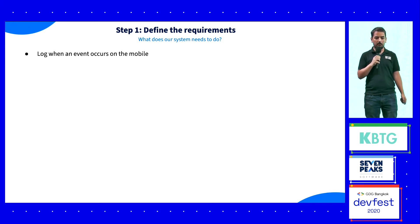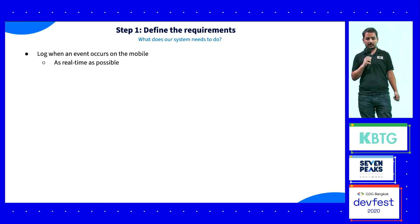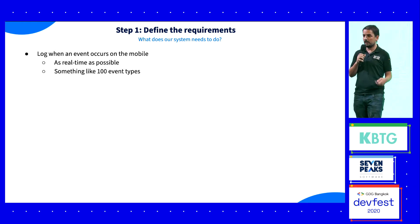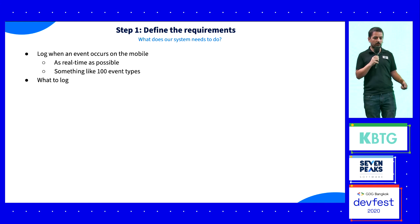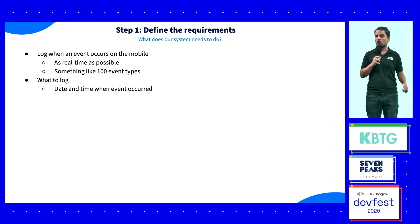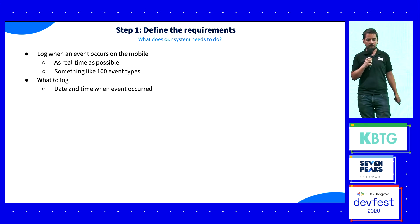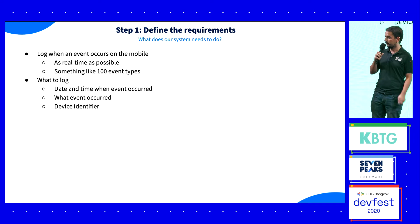In our example, we want to log when an event occurs on the mobile. We want to log the date and time when the event is occurring — because even if it's as real-time as possible, the user may be disconnected. We also want the event type that occurred, and of course, the device identifier, so you can group by devices and make some statistics.